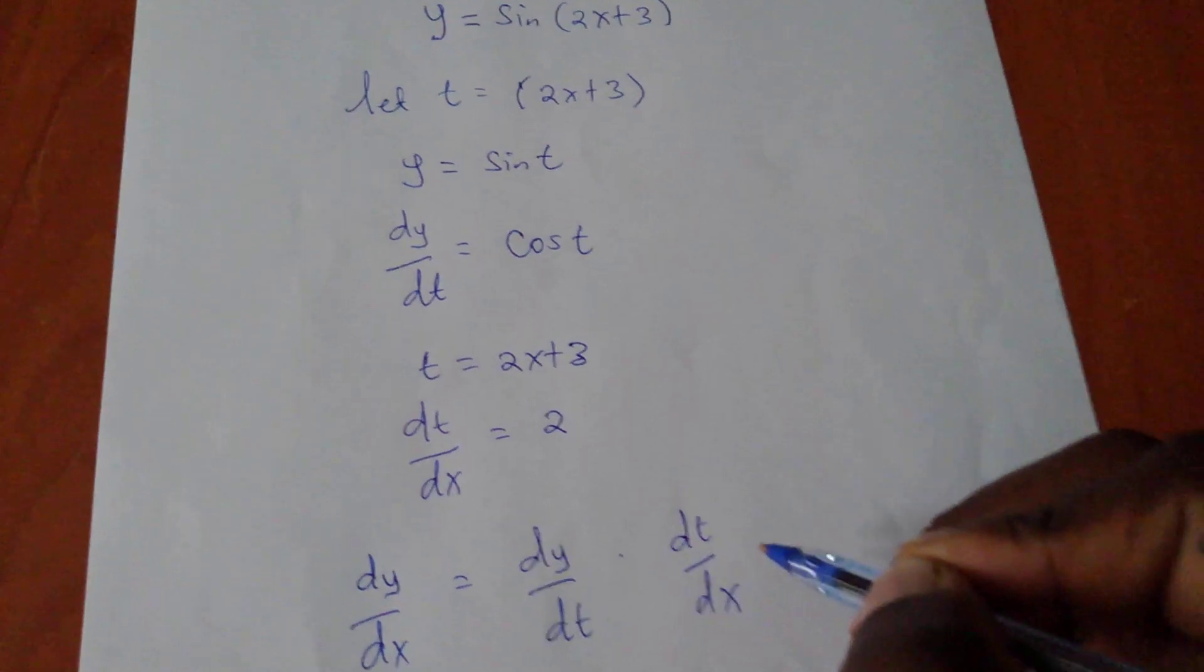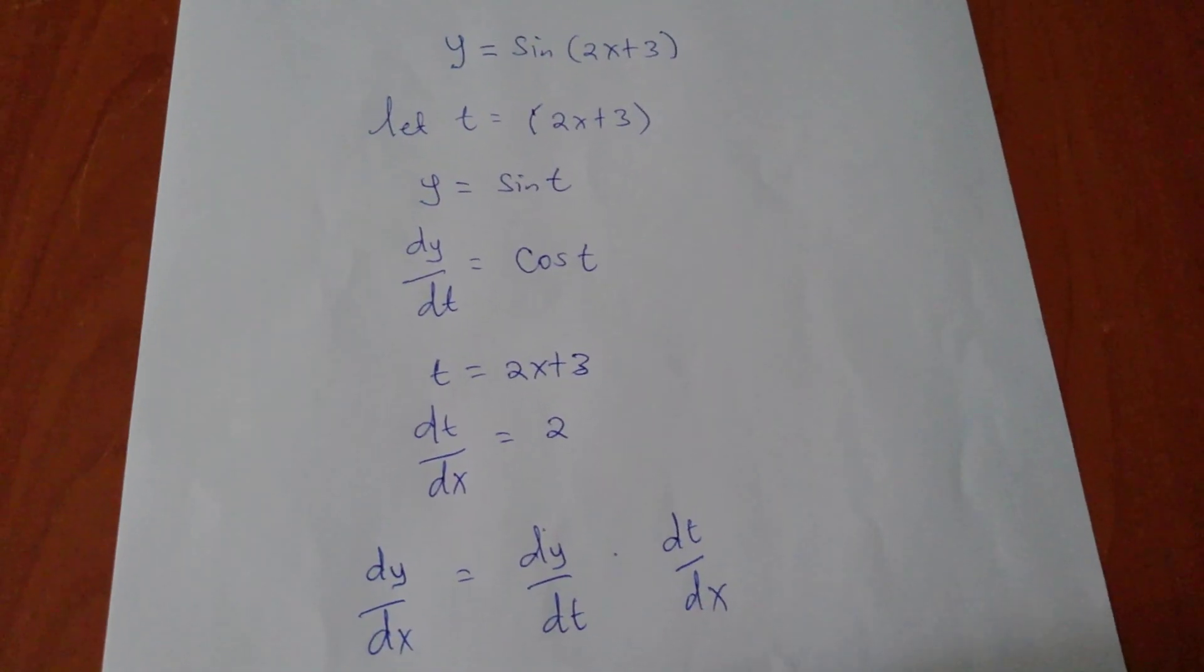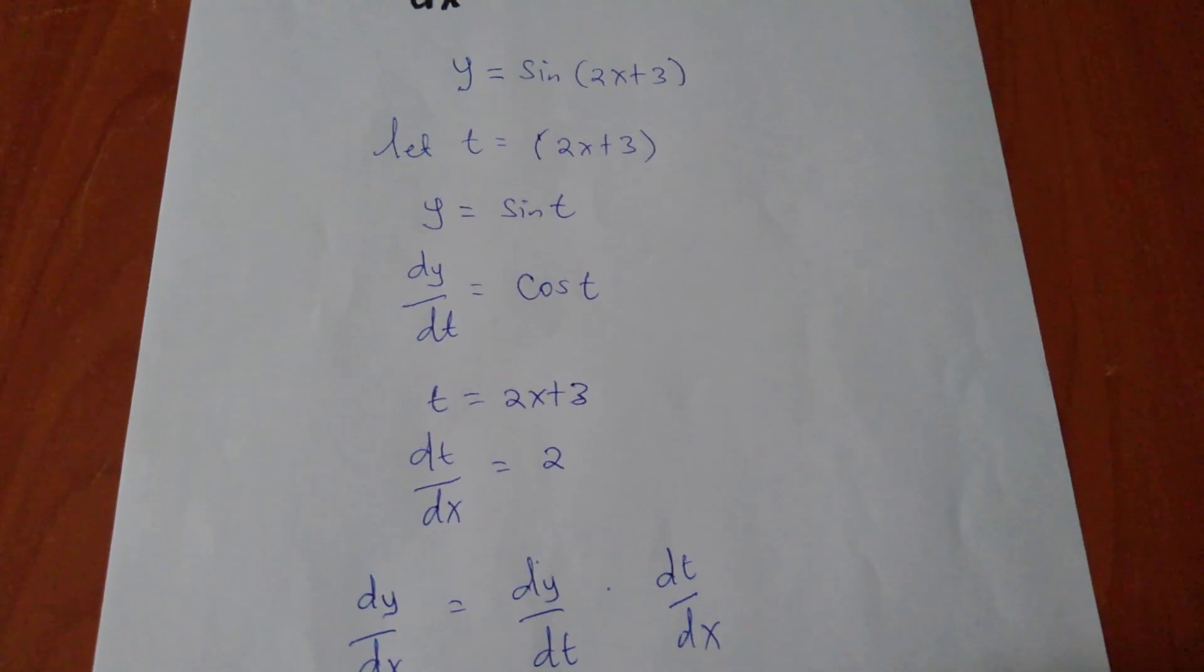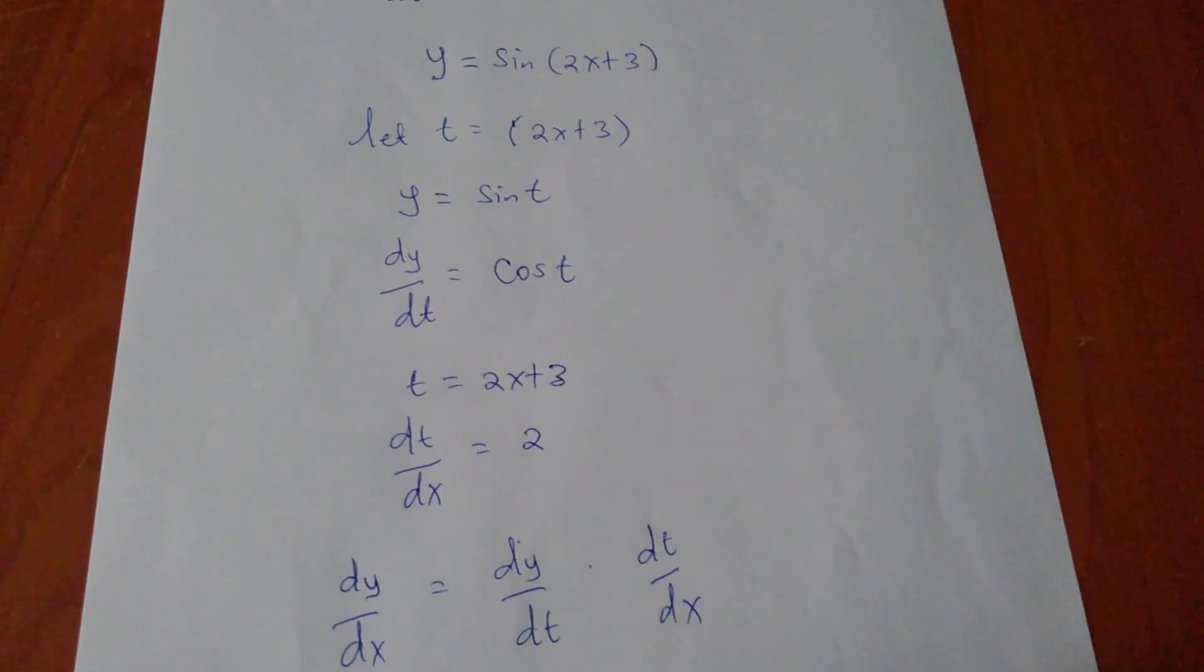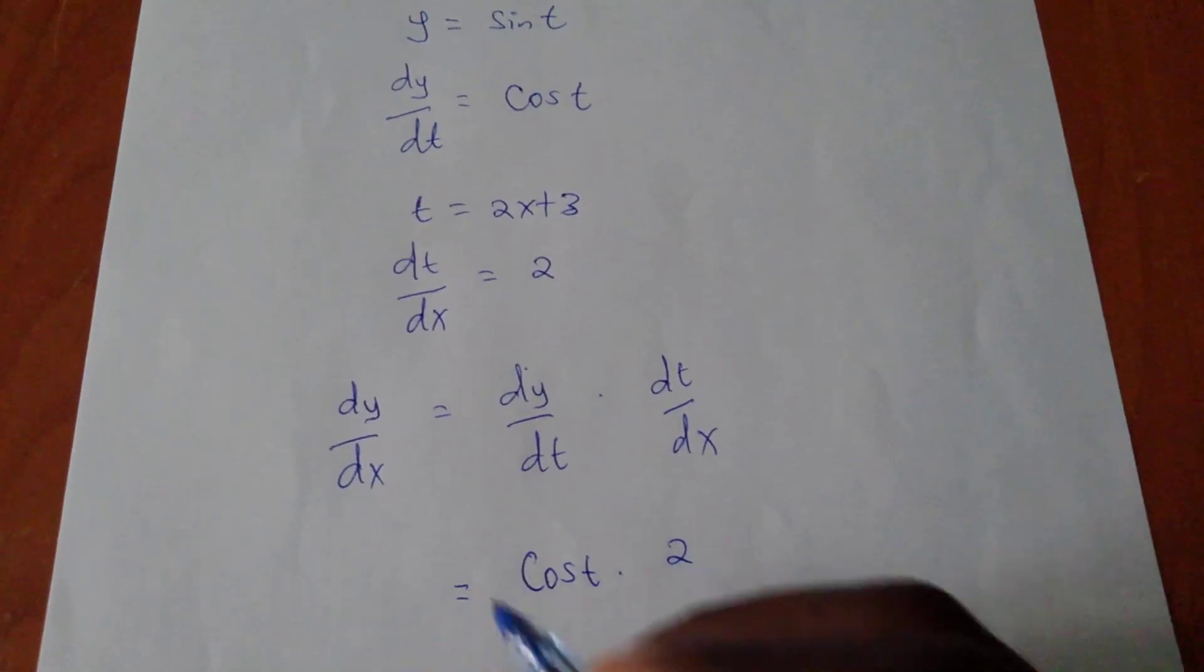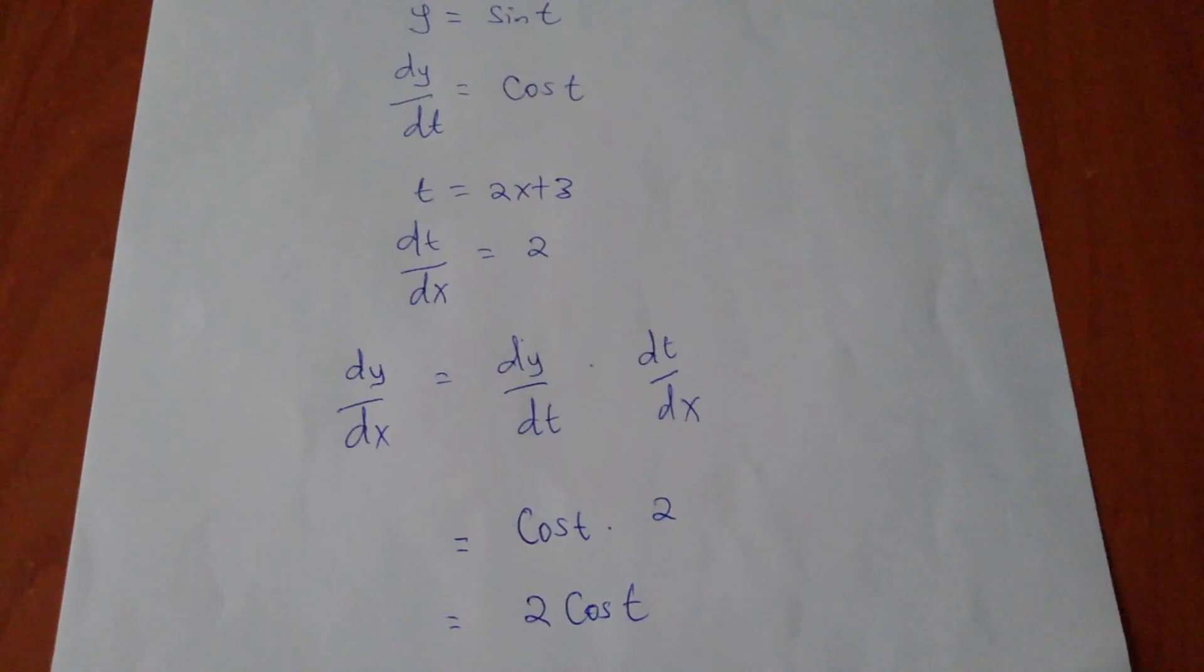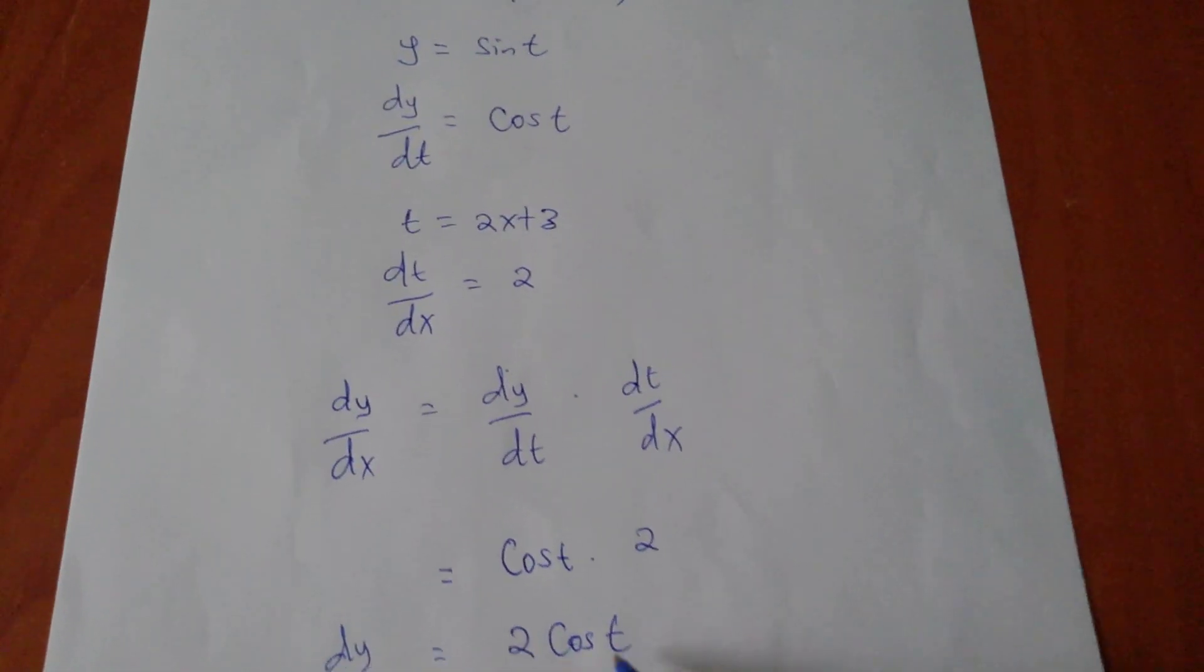Now my dy/dt is, if I look here, it is cos t, times what's my dt/dx? My dt/dx is 2. So I'll have 2 cos t as my dy/dx. But remember this t we have to put it in the form of x since we have here x.